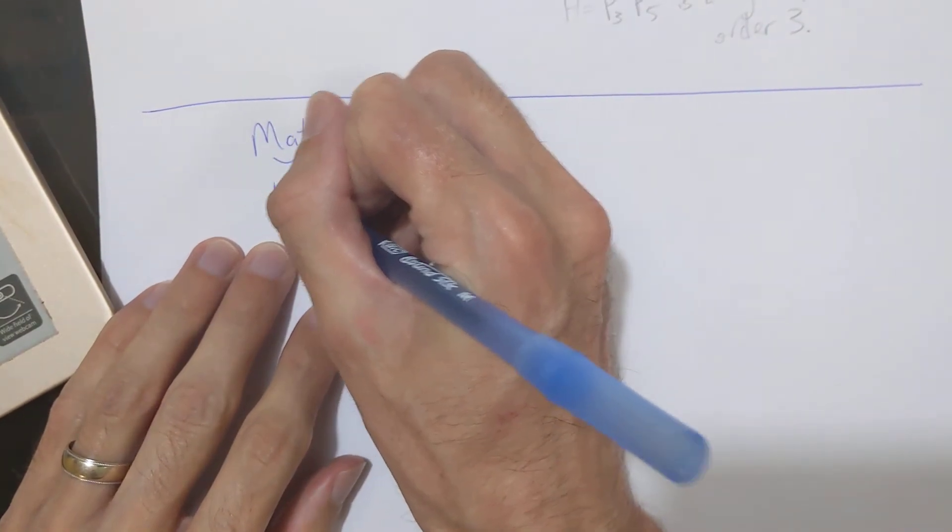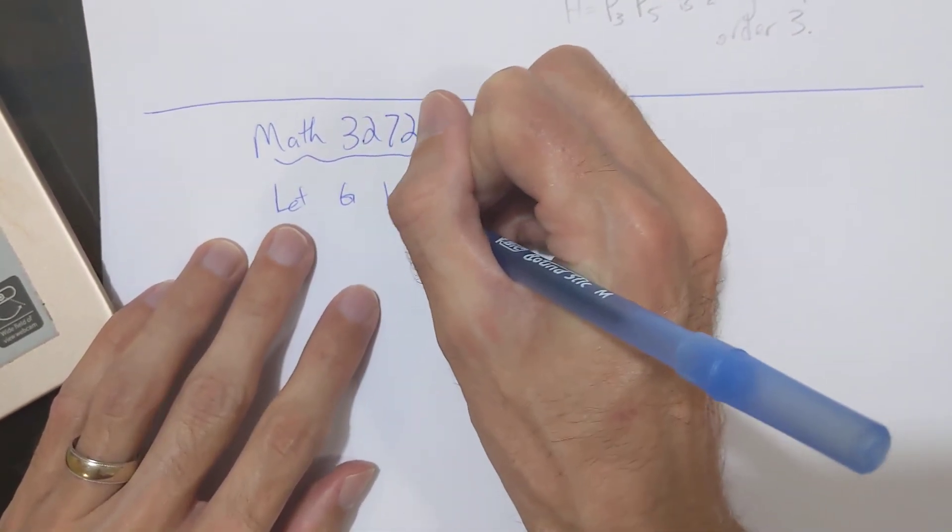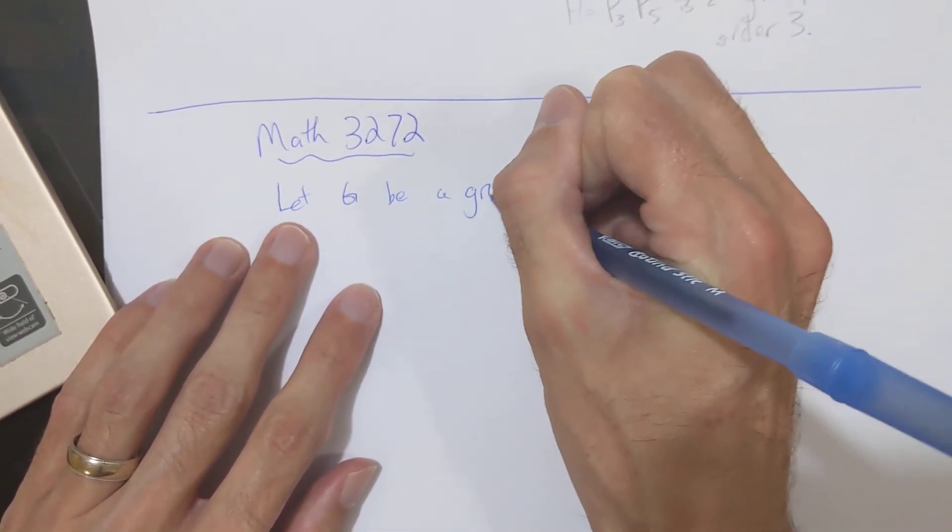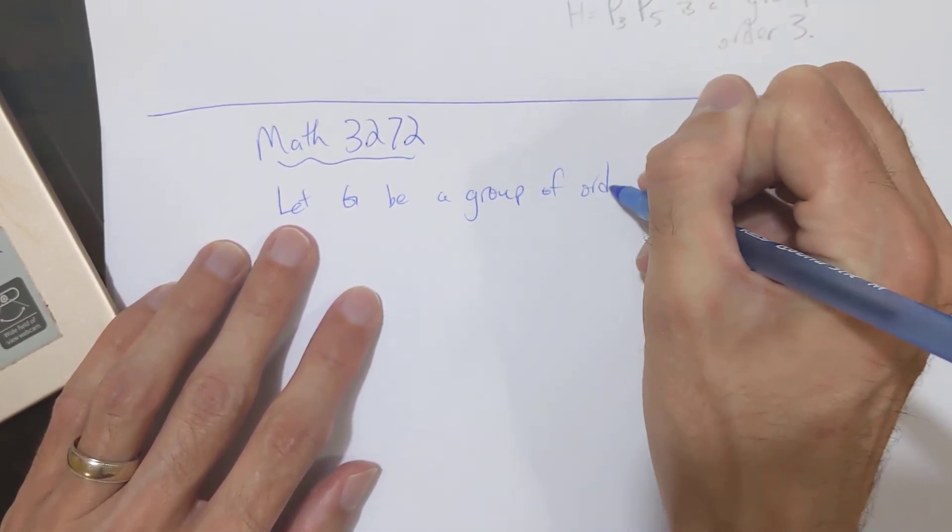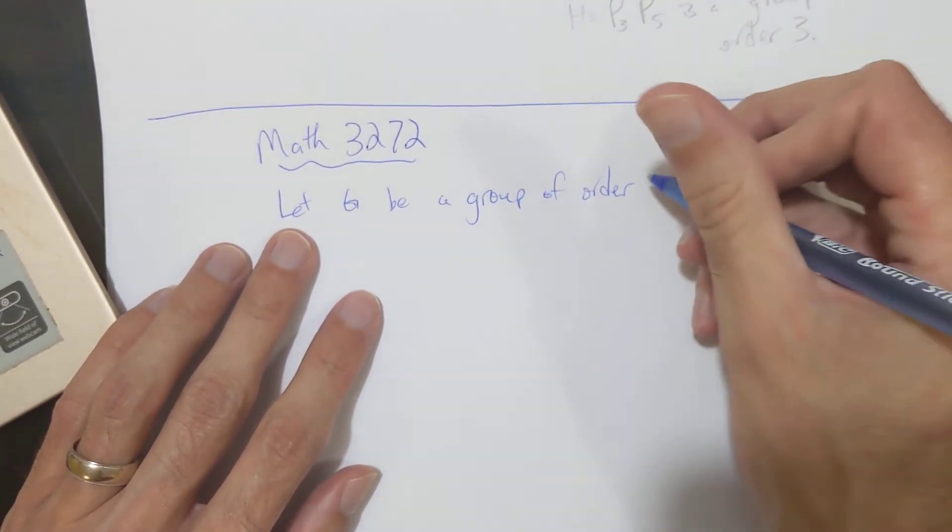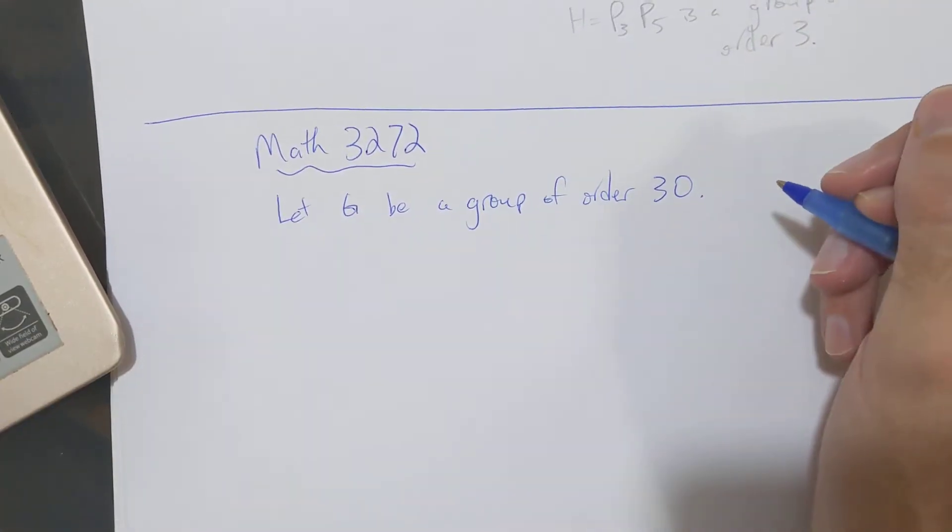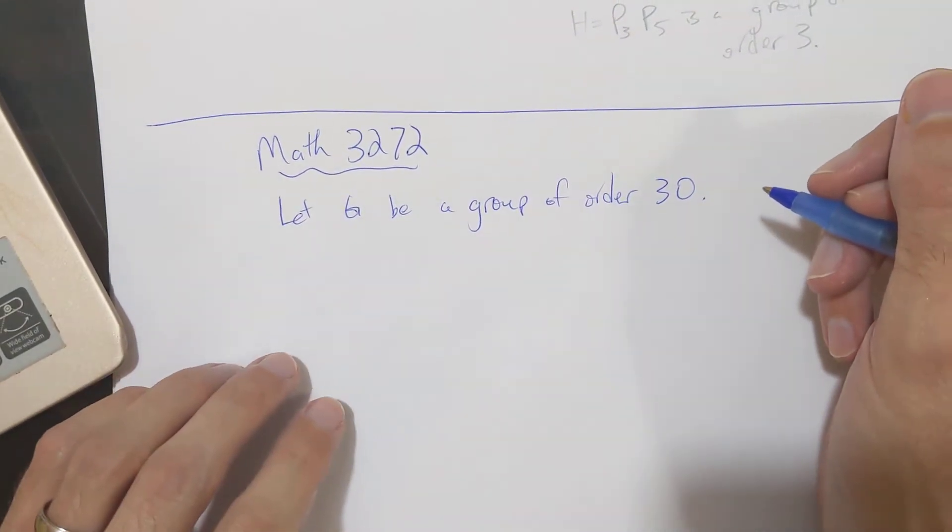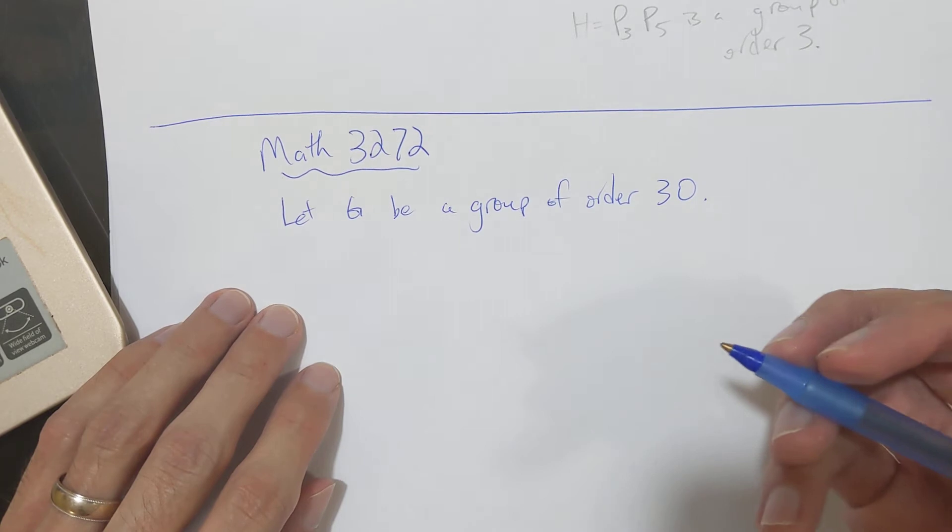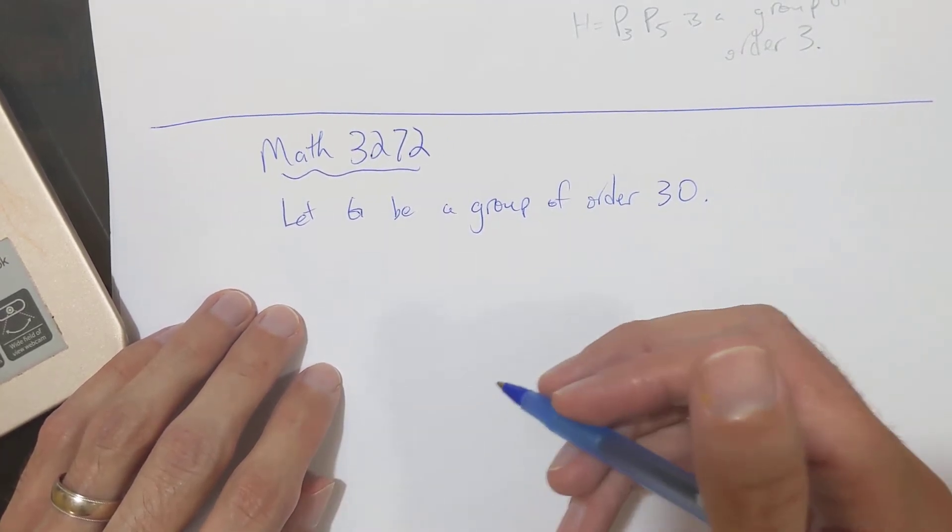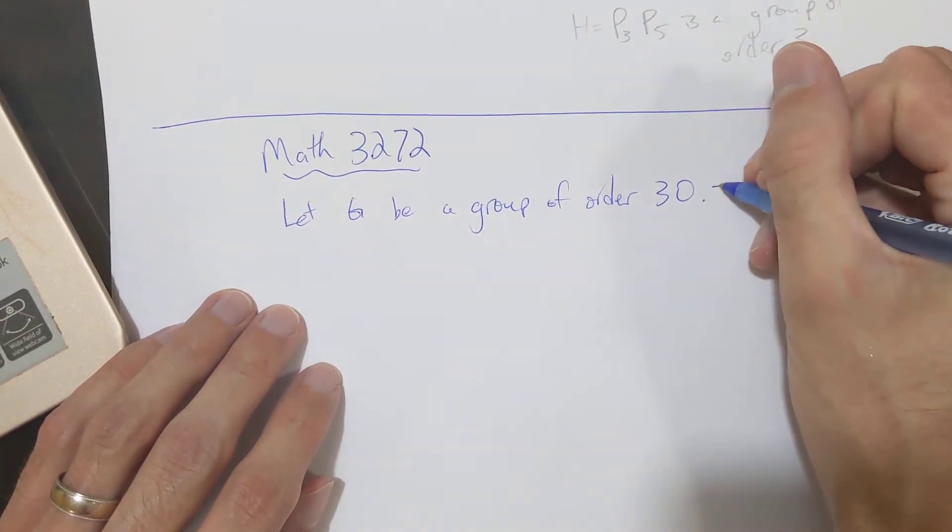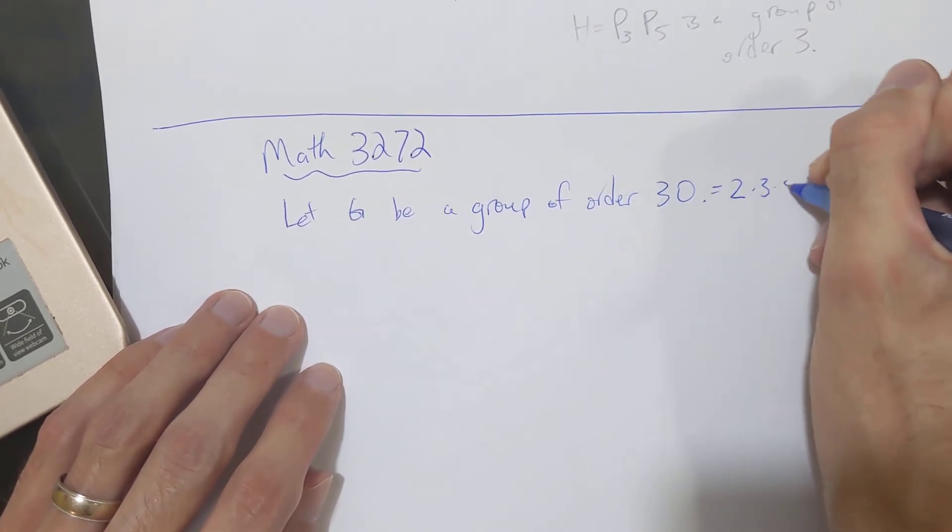So we have G be a group of order 30. In other words, this group has 30 elements. And we use the Sylow theorems for 2, 3, and 5.